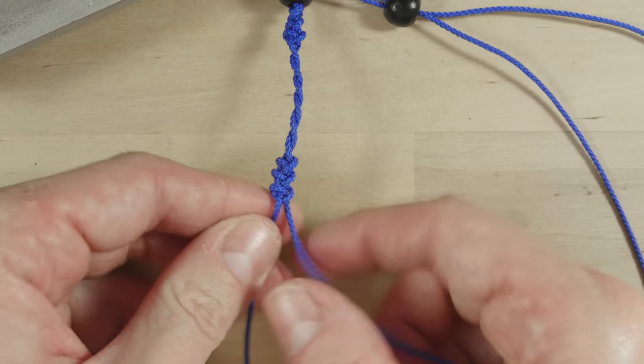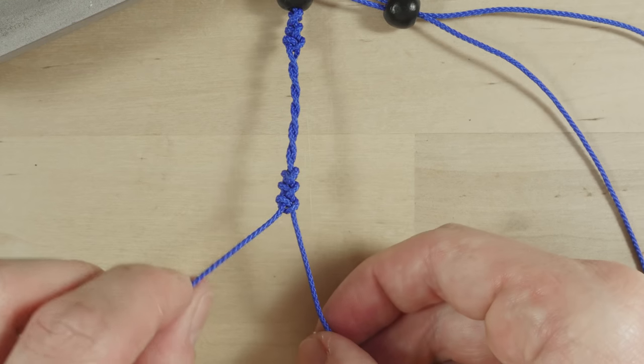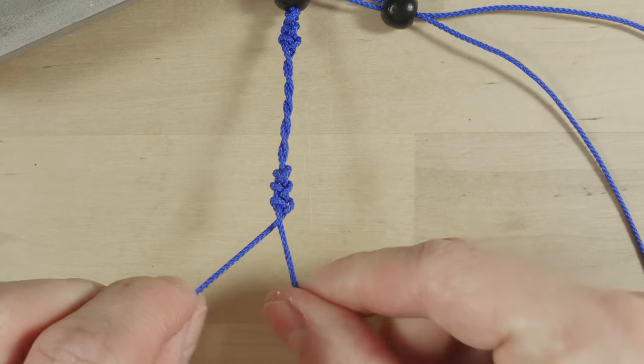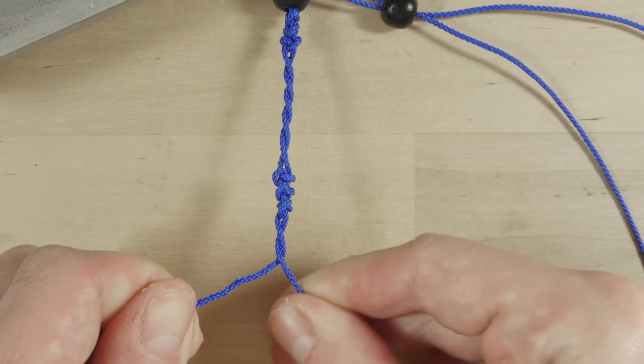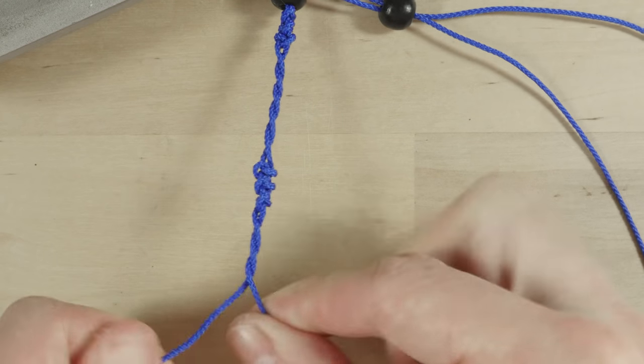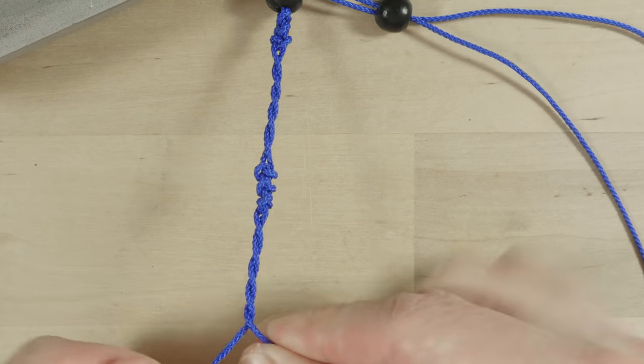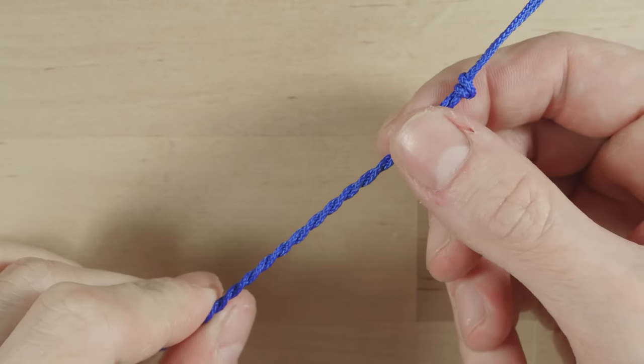Then I'm simply going to continue twisting. So, towards the left, over the right strand. Twist towards the left, and over the right strand. After twisting a sufficient length, we're going to finish up by securing the two ends using a stopper knot.